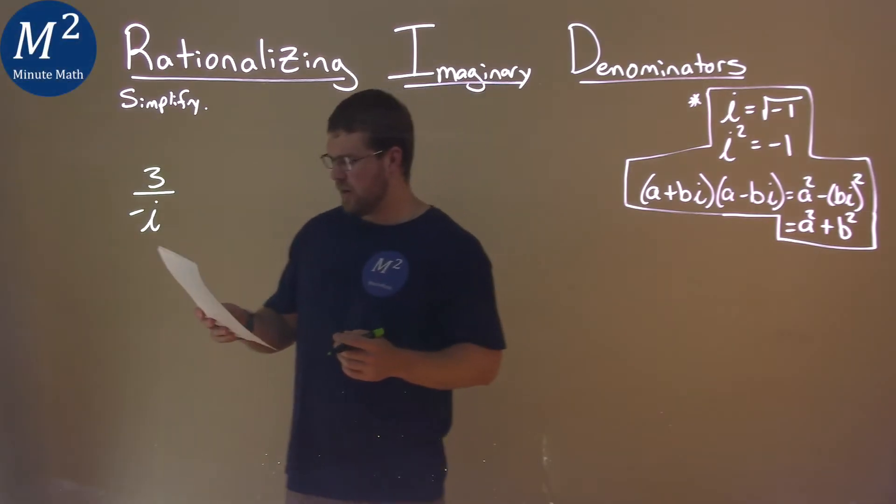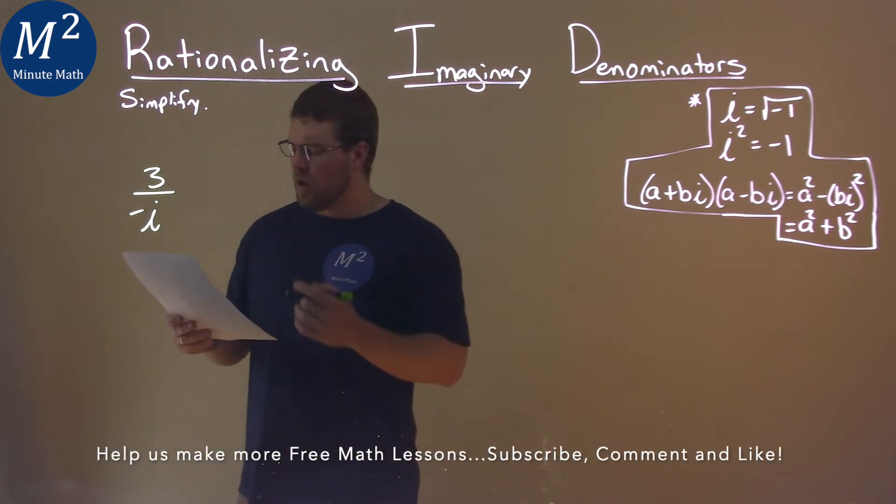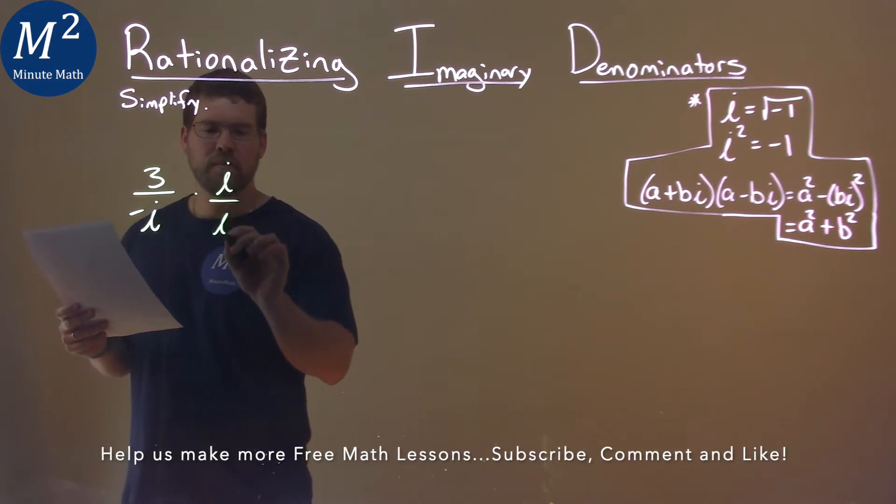We're given this problem right here, 3 over a negative i, and we want to simplify. Well, what I'm going to do is multiply this by i over i.